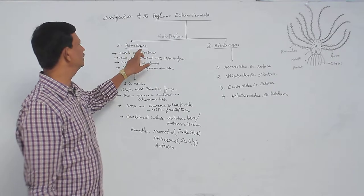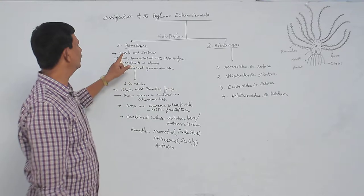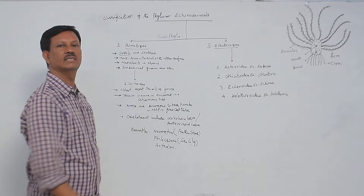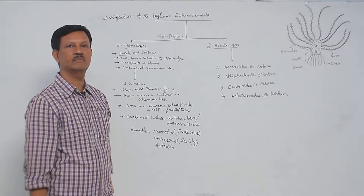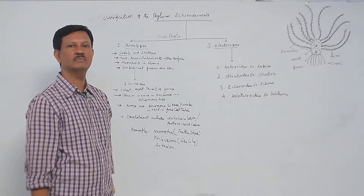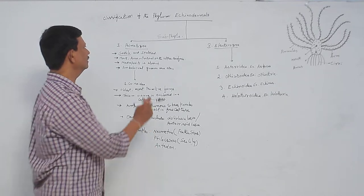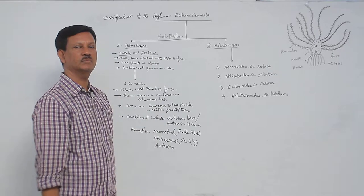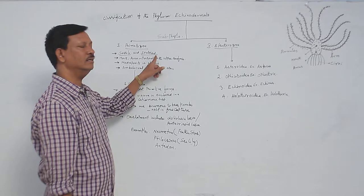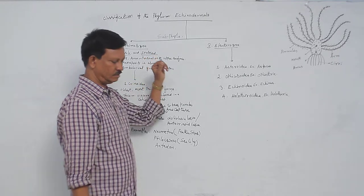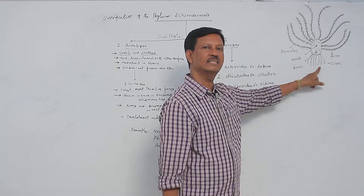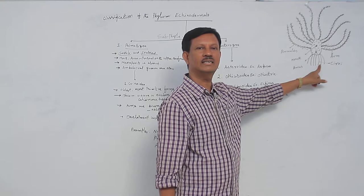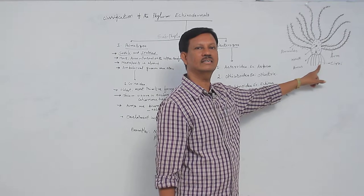The main difference between Pelmatozoa and Eleutherozoa: Pelmatozoa are sessile — they do not move from one place to another, just like plants. They are attached to the substratum in the water and have a stalk. With the help of the stalk, they are attached to the substratum. You can see in the diagram that cirri are present, and with the help of the cirri they are attached to the substratum — that is why they are sessile or sedentary animals.